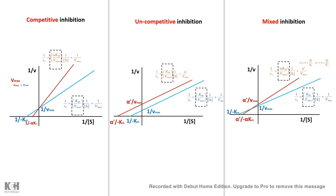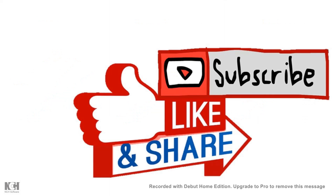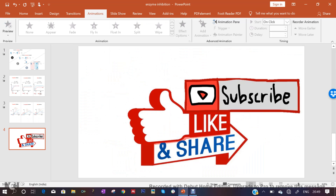That was the overview of the kinetic data — the equations and graphs — for all these types of reversible inhibition. For detailed information on each inhibition type, watch the enzymology playlist where derivations are explained step by step. I hope you enjoyed this short video. If you liked it, give it a thumbs up, and don't forget to like, share, and subscribe. Thank you.